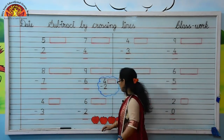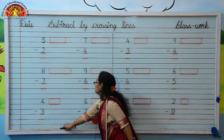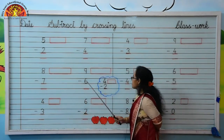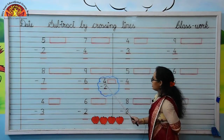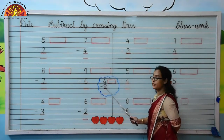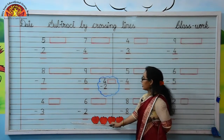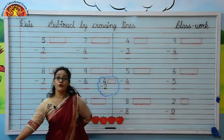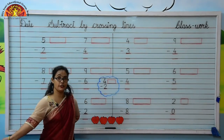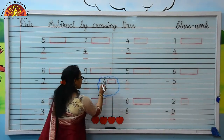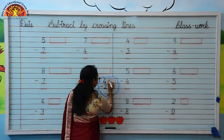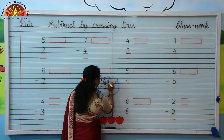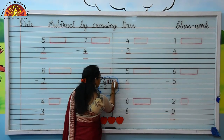Yes kids, let's look at an example. Which number is written here? Yes, 4. We will draw here 4 lines like this: 1, 2, 3, 4.